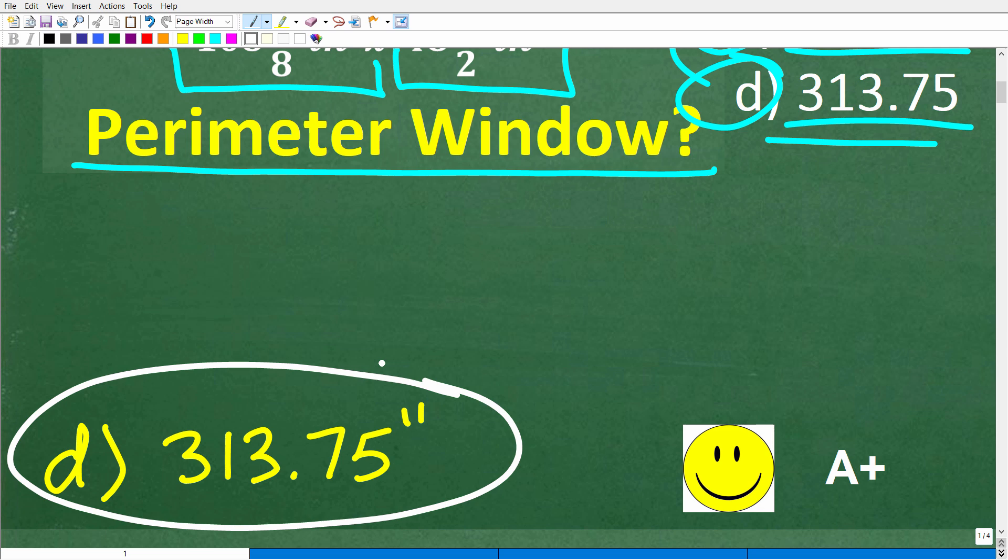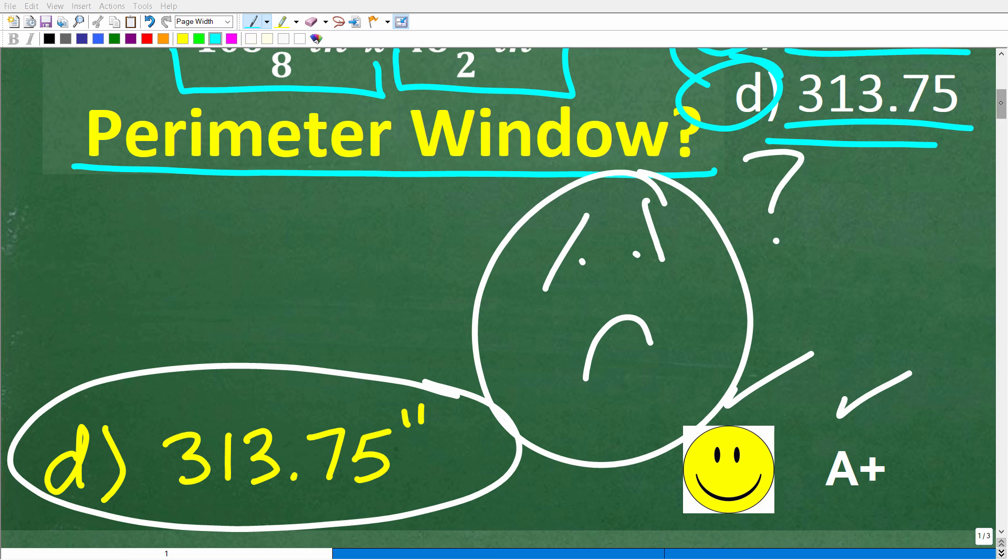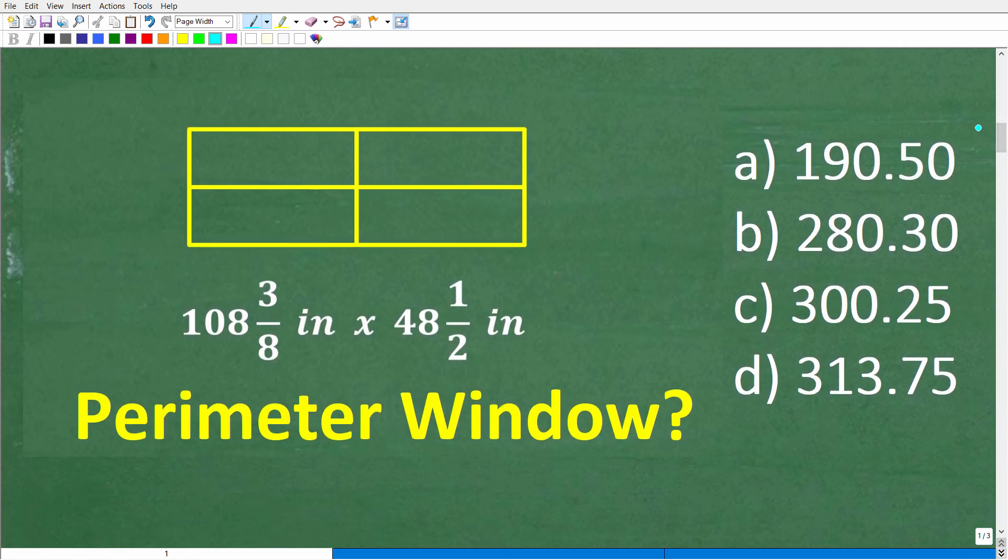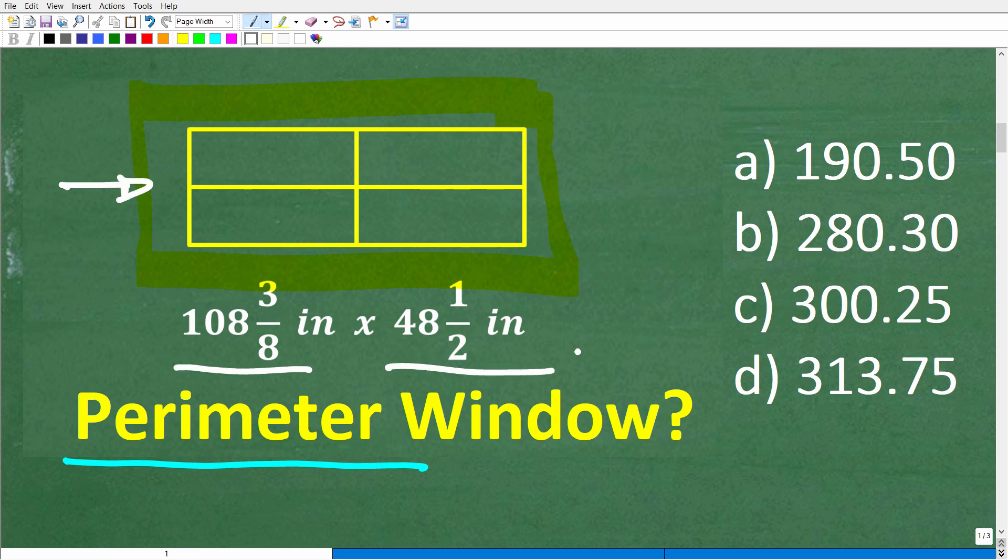Alright, now, if you got this right, well, you definitely get a happy face and an A+. And if you're like, Mr. U2 Math Man, I still don't remember what the perimeter is or how to calculate it. Can you help me out? Well, I definitely can. So the first thing that we need to do is review what the perimeter is. Now, this is not that difficult. All the perimeter is is the sum total distance around a figure.